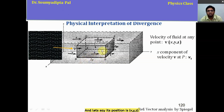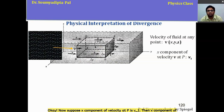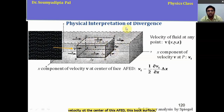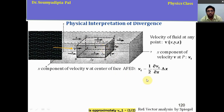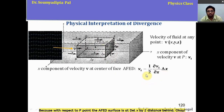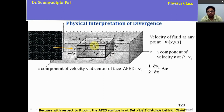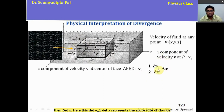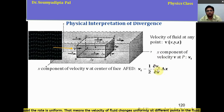Let P have position (x, y, z). Suppose the x-component of velocity at P is V₁. Then the x-component of velocity at the center of the back surface AFED is approximately V₁ − (1/2)(∂V₁/∂x)Δx. The minus sign comes because the AFED surface is at a distance Δx/2 behind point P. Here ∂V₁/∂x represents the spatial rate of change of velocity with respect to the x-coordinate, and this rate is assumed to be uniform.